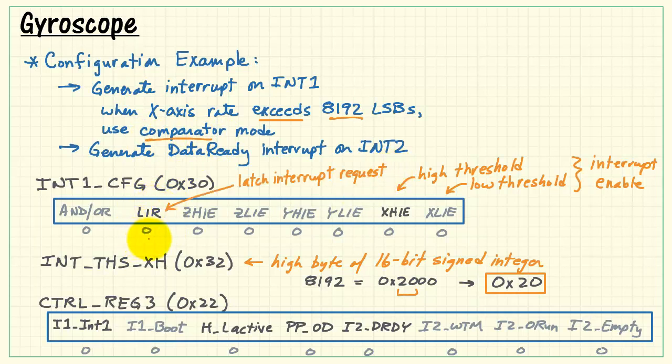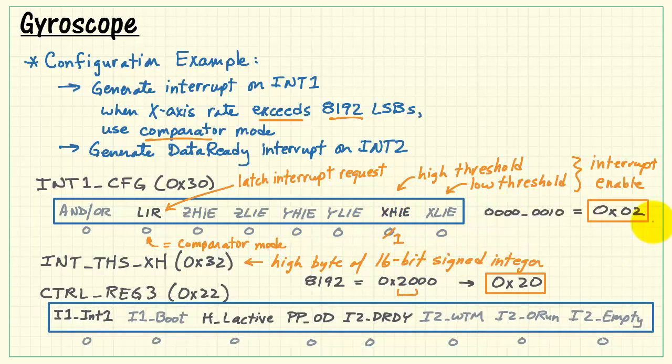Comparator mode, that's selected from this bit right here. This stands for Latch Interrupt Request, and when this bit is 0, we are in Comparator Mode. We need to set this to a 1 to enable the high threshold interrupt. Altogether, those bit fields look like hexadecimal 02.